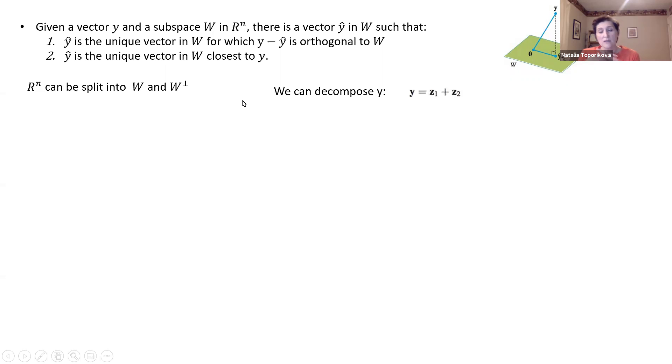So basically, if we have two subspaces, each one with a basis vector, we can actually decompose our vector y into two subcomponents, which we call z1 and z2. So z1 would be formed by the span of basis vectors of W, and z2 will be spanned by basis vectors of our complementary orthogonal space of W.